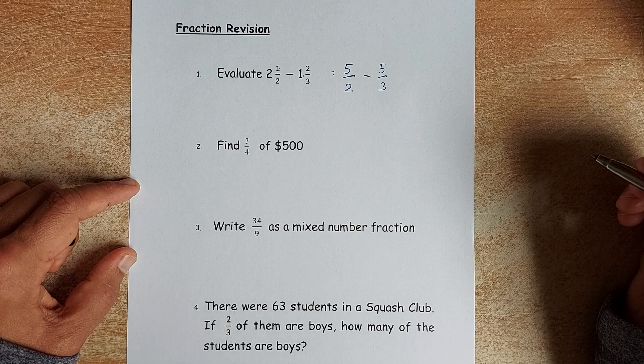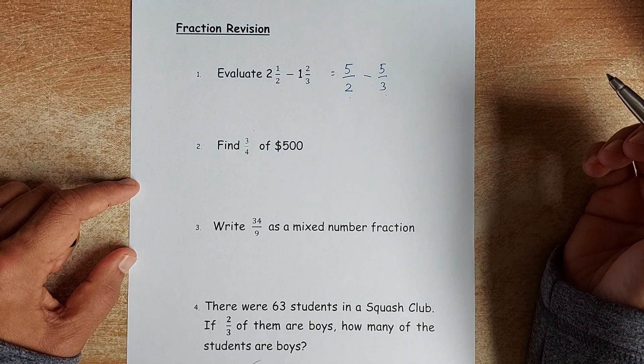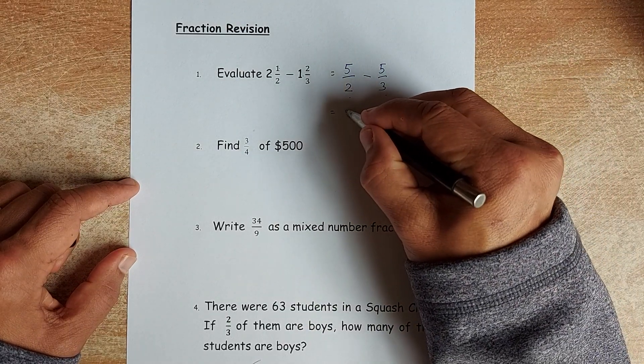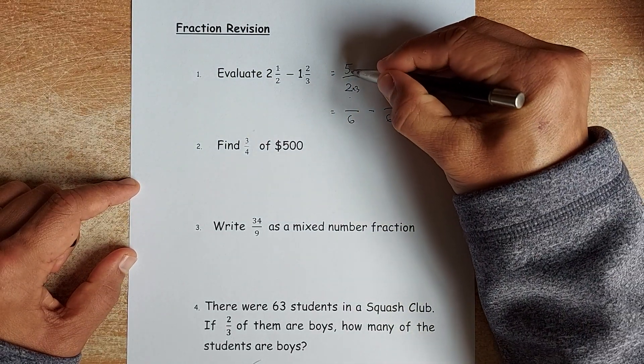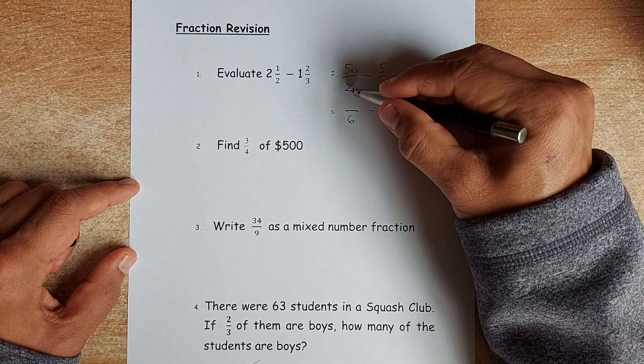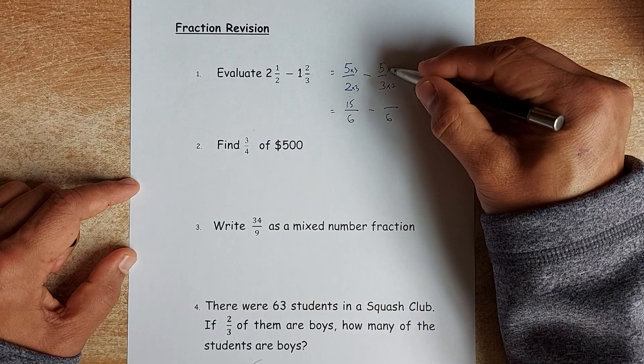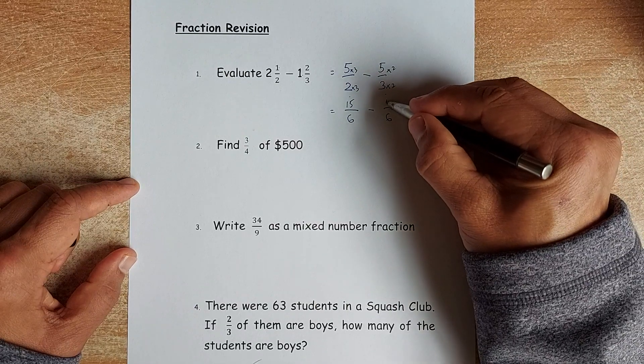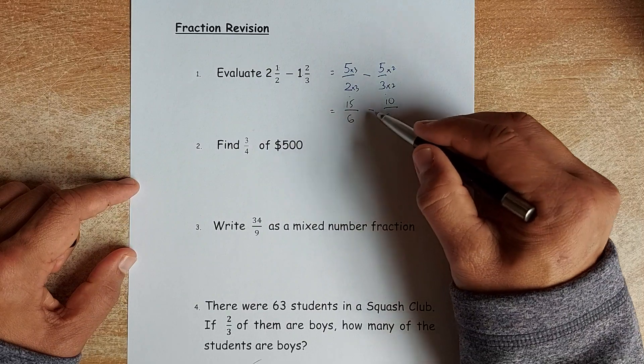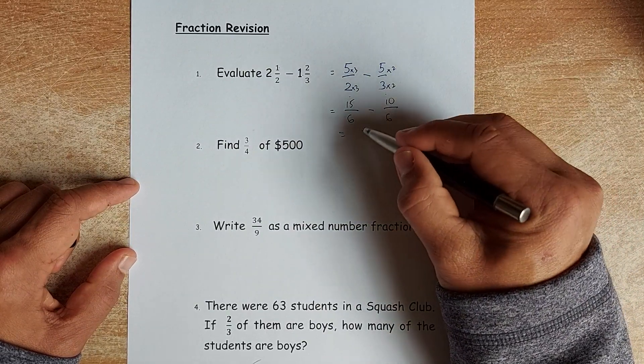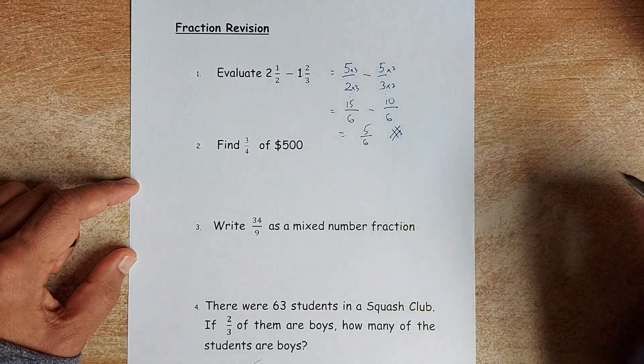Now, when you are subtracting a fraction, the denominator has to be the same. To do that, you must change the common denominator and the common denominator is 6. To get 6, you multiply by 3. So 5 over 2 is the same as 15 over 6. And to get 6, you multiply by 2. So 5 over 3 is the same as 10 over 6. When the denominator is the same, 15 minus 10 is 5 and the denominator remains the same. And that will give you your first answer, 5 over 6.